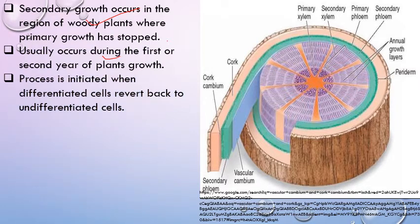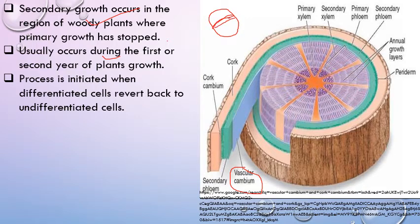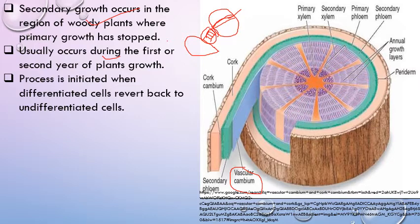Secondary growth is initiated by two types of cambium: intrafascicular cambium and interfascicular cambium. These both combine to form vascular cambium. The cambium present between xylem and phloem within the vascular bundle is called intrafascicular cambium. Between two vascular bundles, parenchyma cells — already differentiated cells — revert back to form meristematic cells, forming a cambium strip called interfascicular cambium. Both combine to form vascular cambium, responsible for secondary growth.